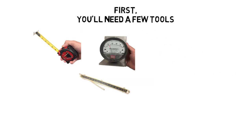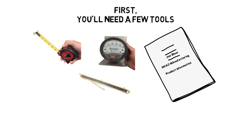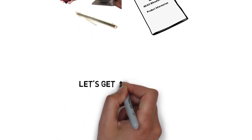Second, a magnehelic or a U-tube manometer, something to measure static pressure. And number three, the manufacturer's product data with a fan curve in it for the unit you're working on.